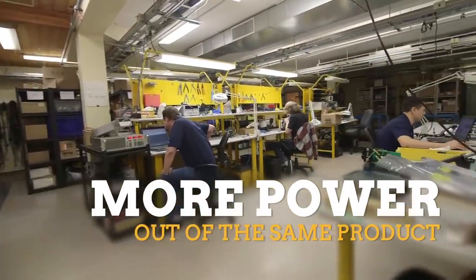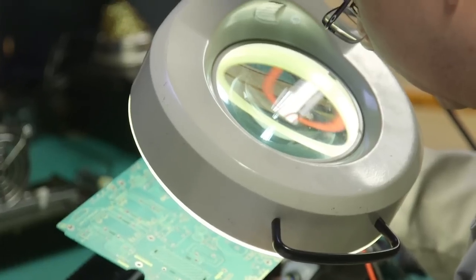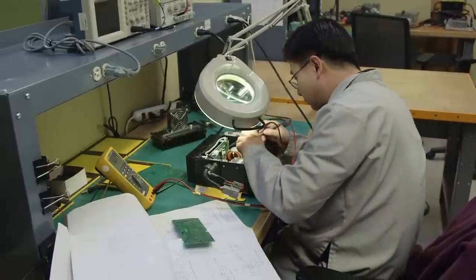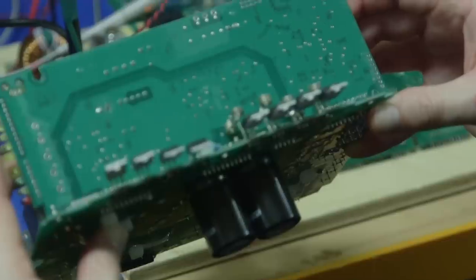Every charger that is returned to Delta Q gets analyzed. We very carefully document all of the different issues that are noticed in the return chargers. Then the engineers will analyze the mechanisms, try to see if there's a design improvement that can be made to address the various issues that get found in the return chargers.